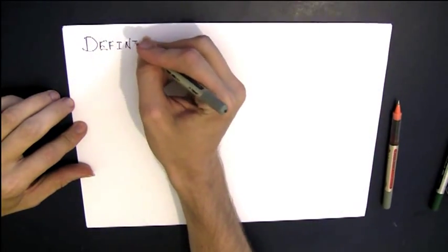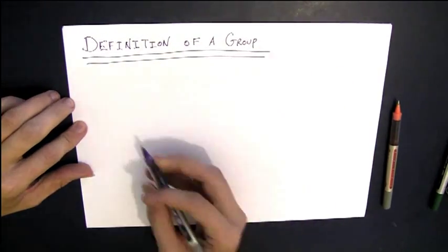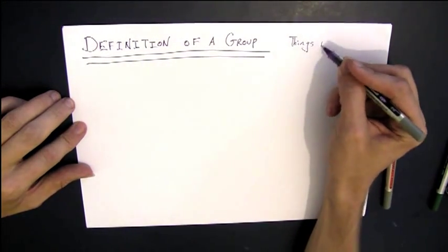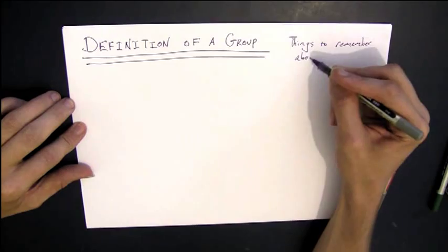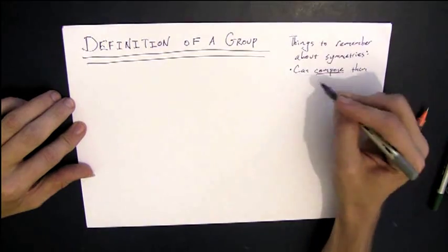So now we're finally going to get to the definition of a group. And to give that definition, we're going to try to remember some of the things that we've learned about symmetries and then abstract those, turn them into something that isn't necessarily just about symmetries anymore.